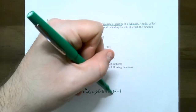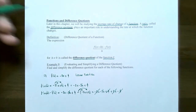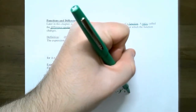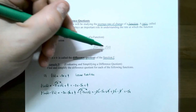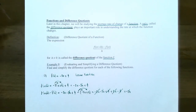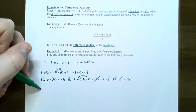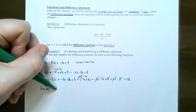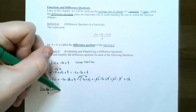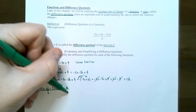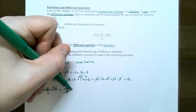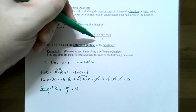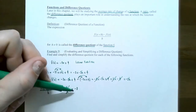Now combine like terms. The negative 3x plus 3x is 0, and 4 minus 4 is also 0. The only term remaining is negative 3h. Notice every term in the numerator must have an h in common. Now for the last step, divide by h: negative 3h divided by h. The h's cancel, and the difference quotient is simply negative 3. It seems surprising that the answer is just a number, but it is — just negative 3.